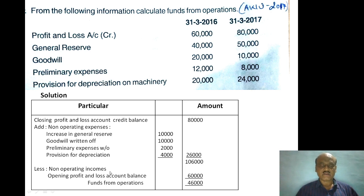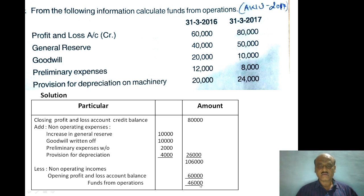We then deduct non-operating income such as profit on sale of machinery and profit on sale of building. We also subtract the opening profit and loss account balance of 60,000, giving the final funds from operations figure.